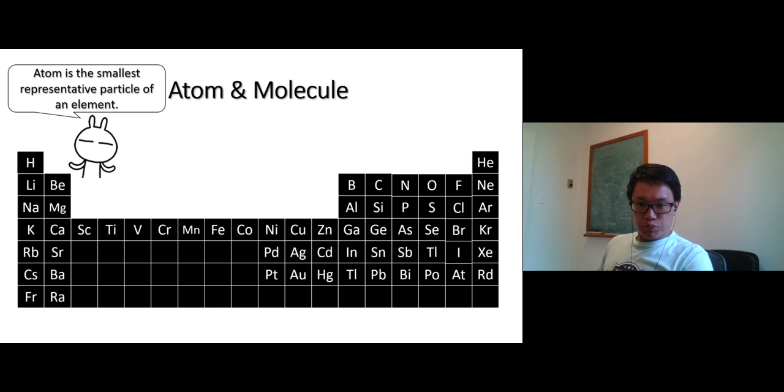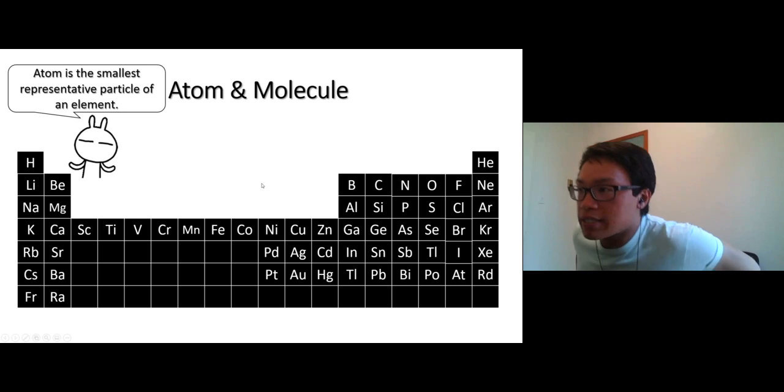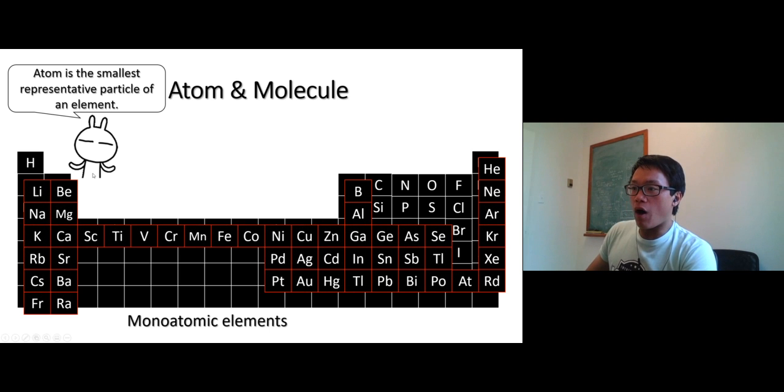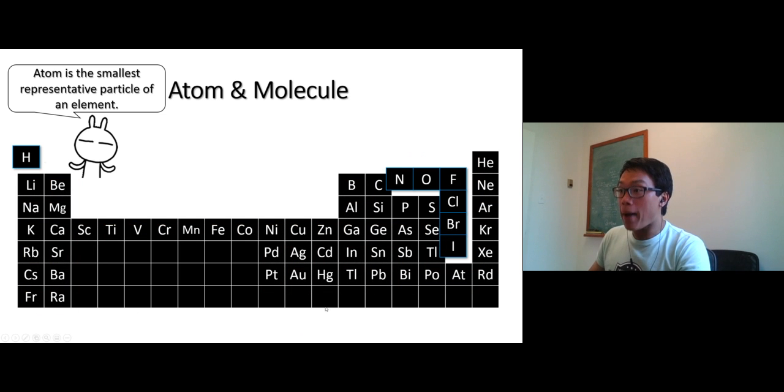Just a little bit about atoms and molecules. The definition of an atom or element: atom is the smallest representation of an element. So we have all this right here. They exist as monoatomic elements: lithium, sodium, potassium, calcium, beryllium, magnesium. On the right side, we have boron, aluminum. In the middle, we have iron right here, chromium right here. These exist as just one element, just like one particle. So we call monoatomic elements.